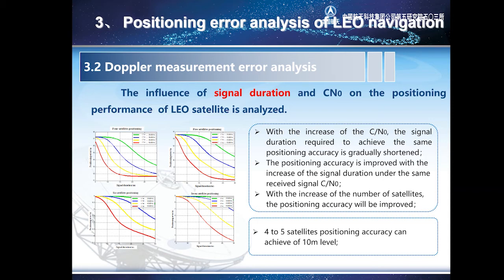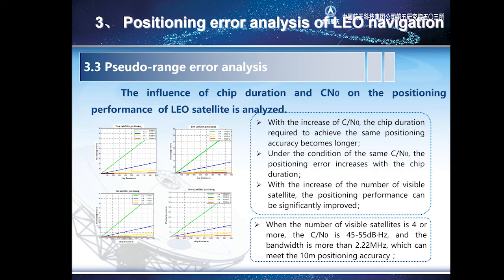With the extension of signal duration and the improvement of carrier-to-noise ratio, the positioning accuracy is improved. Full constellation with 5 or more satellites positioning can achieve accuracy at the 10-meter level. Next, the influence of chip duration and carrier-to-noise ratio on positioning performance is analyzed. With the shortening of chip duration and the improvement of carrier-to-noise ratio, the positioning accuracy is improved. When the carrier-to-noise ratio is 45 to 55 dBHz and the chip duration is 950 ns, positioning accuracy at the 10-meter level can be satisfied.